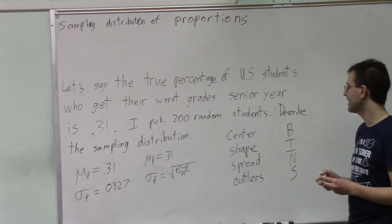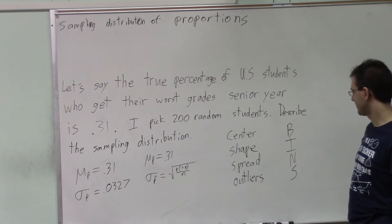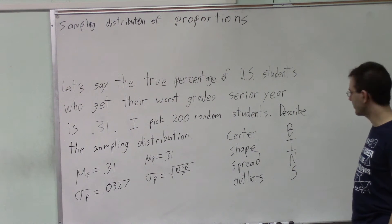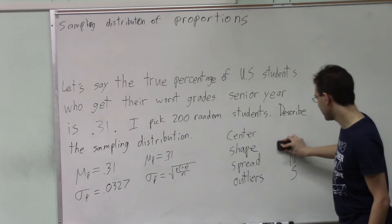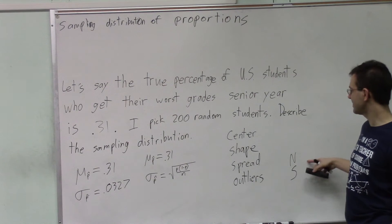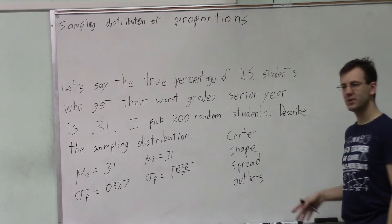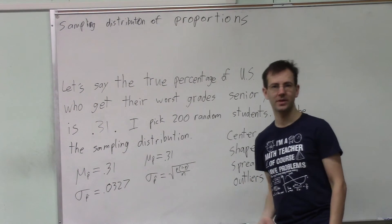Binary, yes, either they had worst things senior year, they didn't. Independent, I said they were random students, so they're not all from the same high school. The number's been selected ahead of time, there are 200 of them, and the probability of success was the same each time, 31%. So it is a binomial situation. So what is the shape of a binomial distribution?